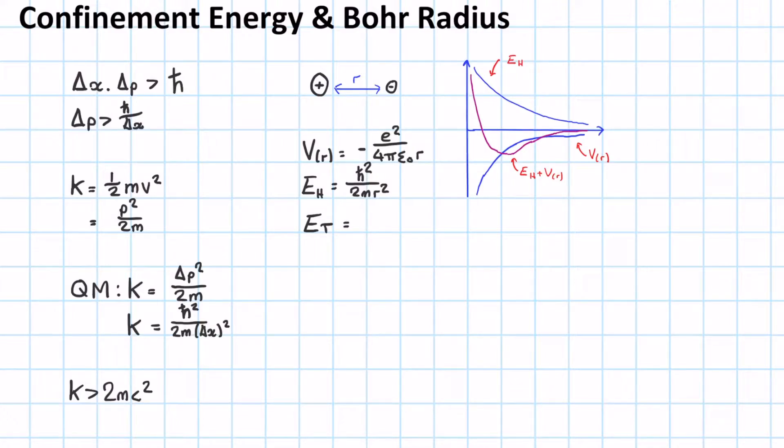So, the total energy is merely the sum of the individual energies. Or, ET equals h bar squared over 2m R squared minus E squared upon 4 pi E naught R. Now, we're going to differentiate this total energy with respect to the radius. So, DET by DR equals minus h bar squared upon M R cubed plus E squared upon 4 pi E naught R squared.